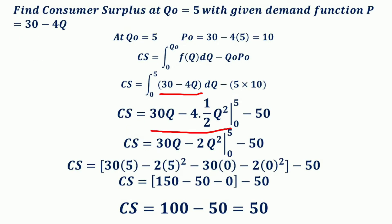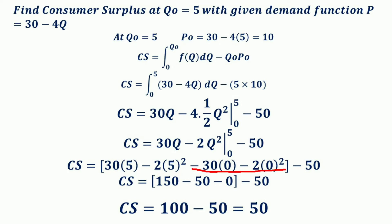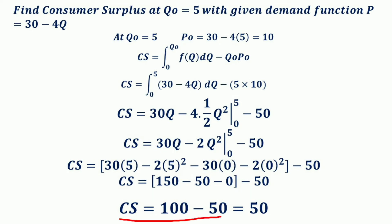The integral of (30 minus 4Q) equals 30Q minus 4 times (1/2)Q², which is 30Q minus 2Q², evaluated at the upper limit of 5 and the lower limit of 0, minus 5 times 10 which equals 50. Substituting Q = 5: 30(5) minus 2(5²), minus substituting Q = 0: 30(0) minus 2(0²), minus 50. So the consumer surplus is 150 minus 50 minus 0 minus 50, which equals 50.